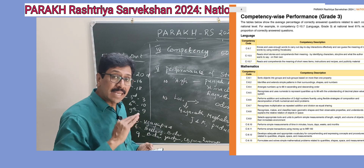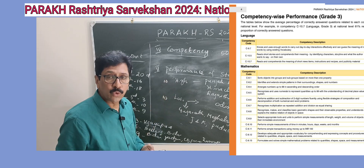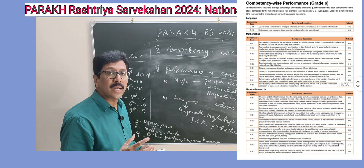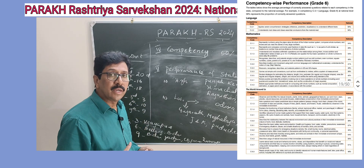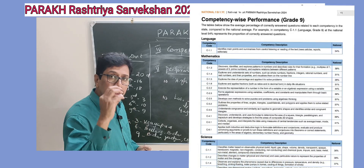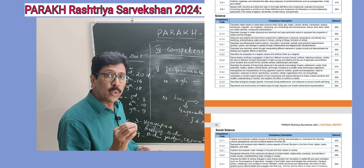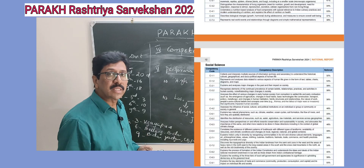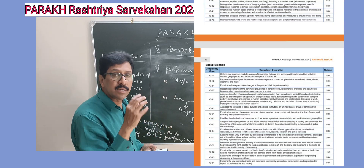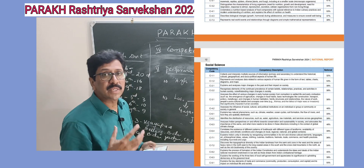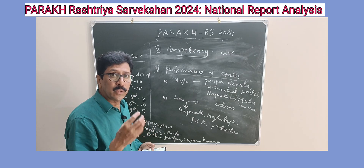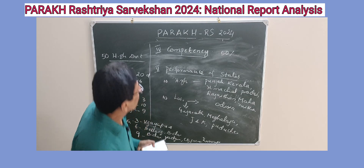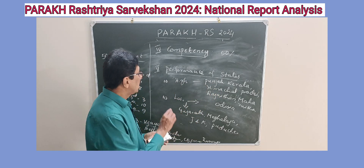At the national level, there are specific competencies in which students performed poorly. The report mentions that when achievement in a particular competency falls below 50 percent, targeted interventions are needed to address those learning gaps. In the slides on screen, you can see which competencies in third, sixth, and ninth standard across different subjects need to be addressed so that students can acquire those competencies.